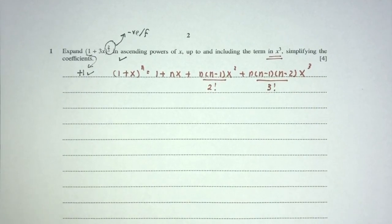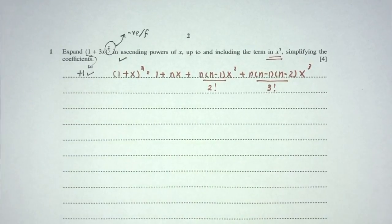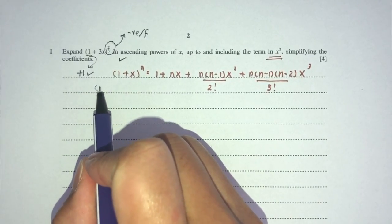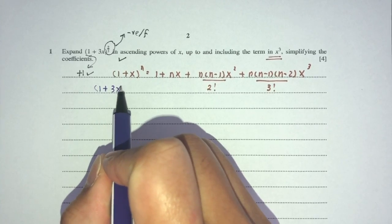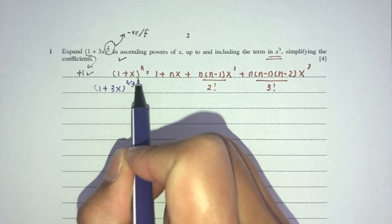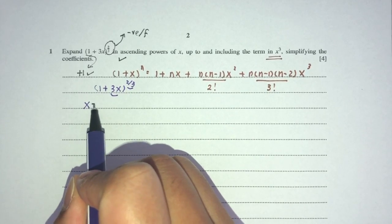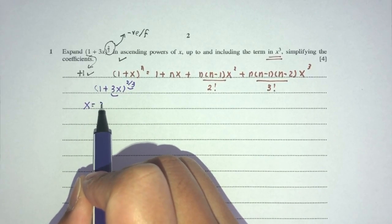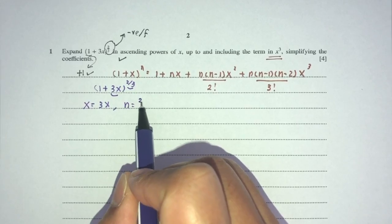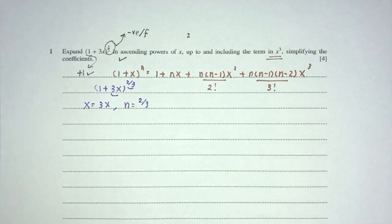Using this formula, let's expand the whole thing. By comparison, you can see this is (1 + 3x)^(2/3). So x here by comparison is 3x and n is the value of 2/3.